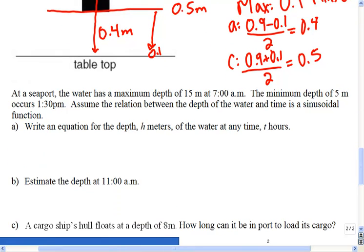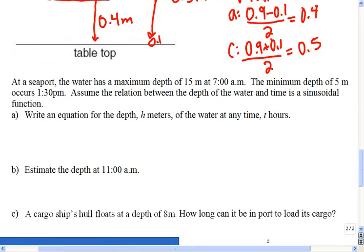So for example, in this one it says the maximum depth is at 7 a.m. and the minimum depth occurs at 1:30 p.m. So see what you can do to come up with those four pieces that will give you your model: amplitude, centerline, phase shift, and period.